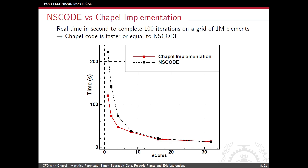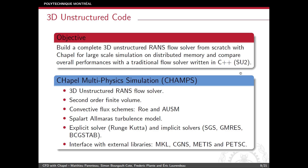Following these results, we decided to build a new 3D unstructured RANS flow solver from scratch. This new code was named CHAMPS — Chapel Multi-Physics Simulation — because eventually we would like to perform multi-physics simulations. As a first development, it is only a flow solver, using a typical second-order finite volume approach with both explicit and implicit solvers implemented.